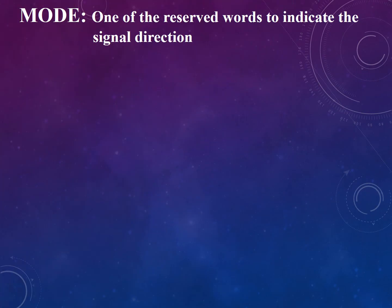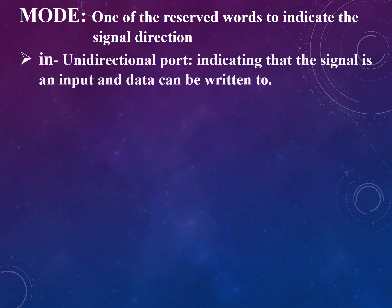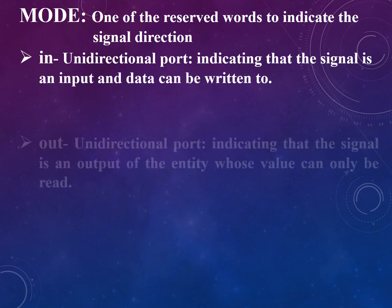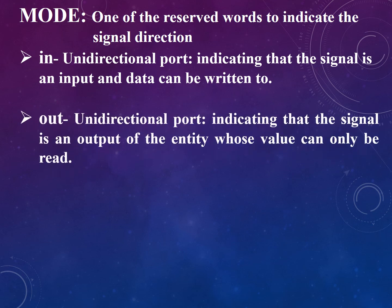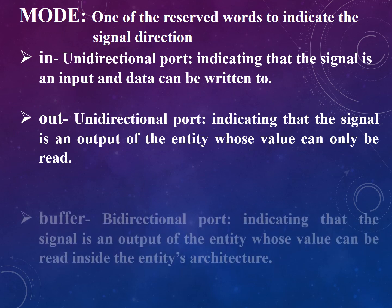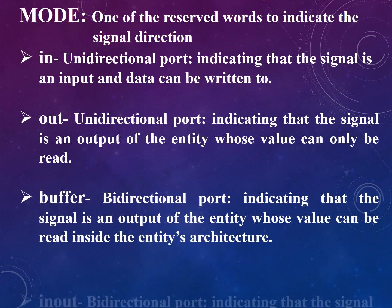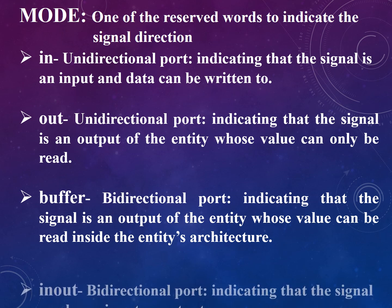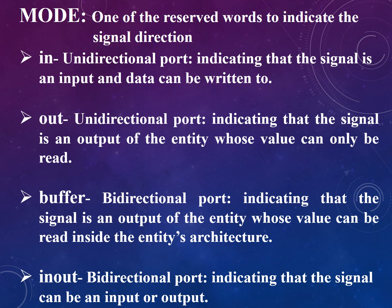Two terms to be familiarized are mode and type. Mode is one of the reserved words to indicate the signal direction, and there are four modes. First, 'in' — a unidirectional port indicating the signal is an input, and data can be written to it. Second, 'out' — a unidirectional port indicating the signal is an output of the entity, whose value can only be read inside the entity's architecture. The last one is 'inout' — a bidirectional port indicating the signal can be an input or output.